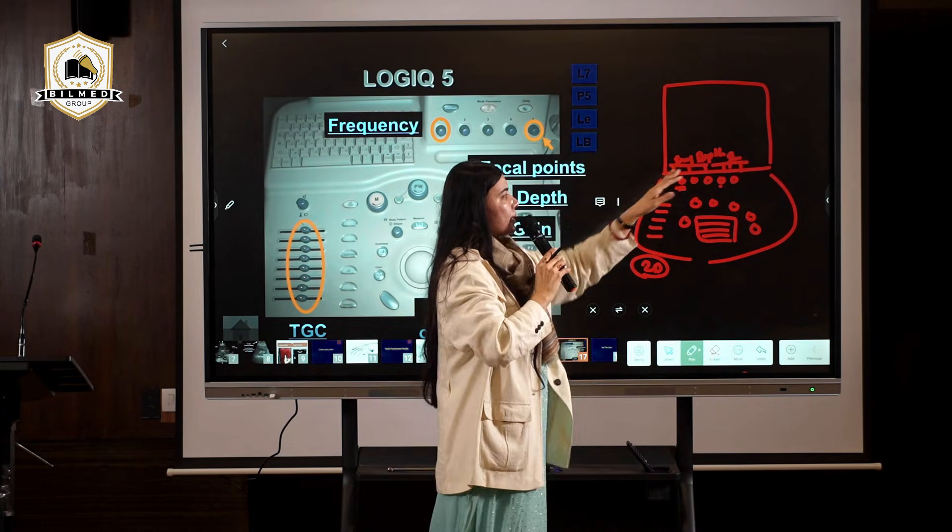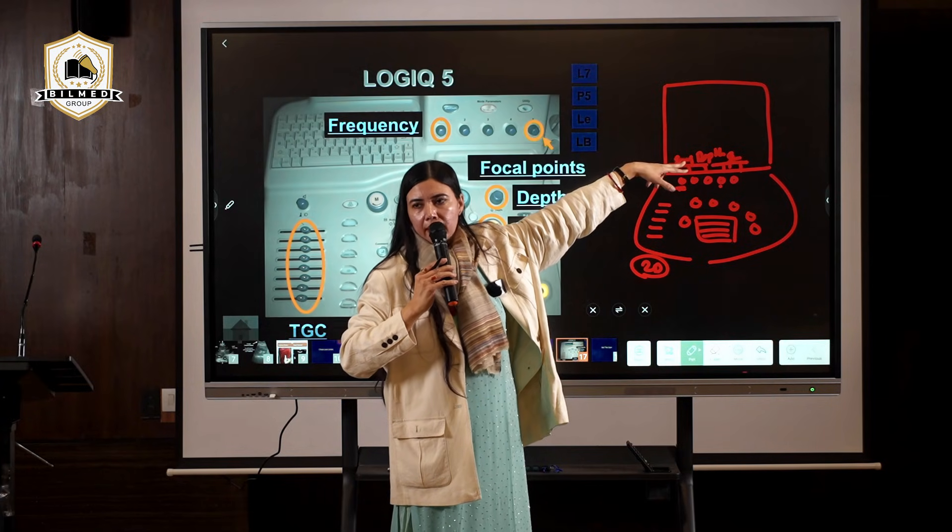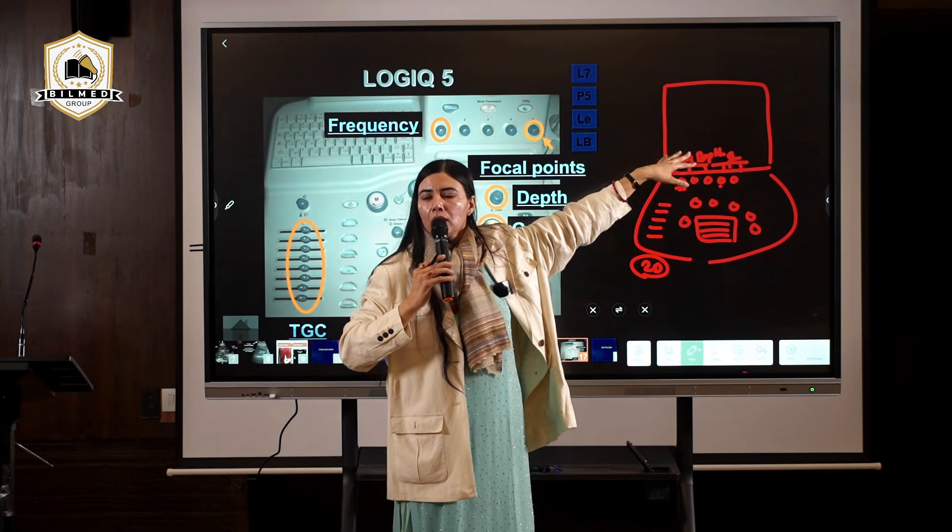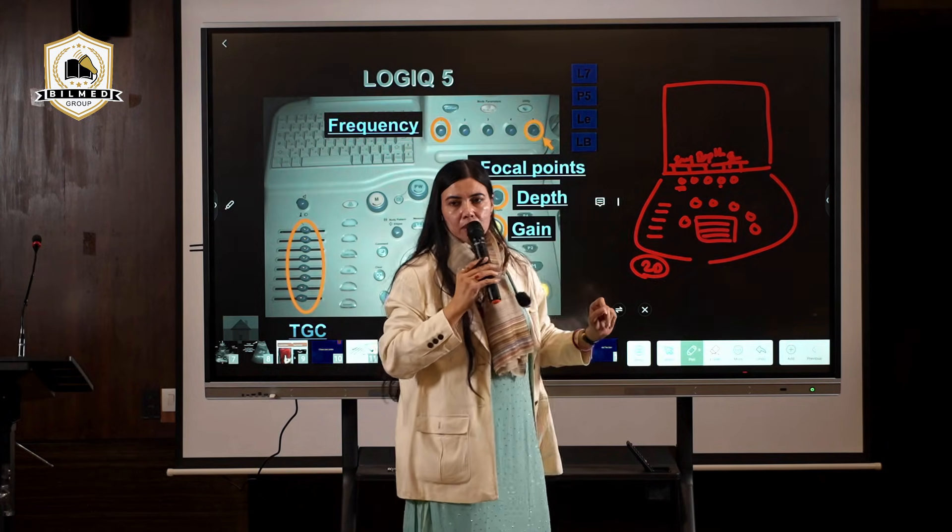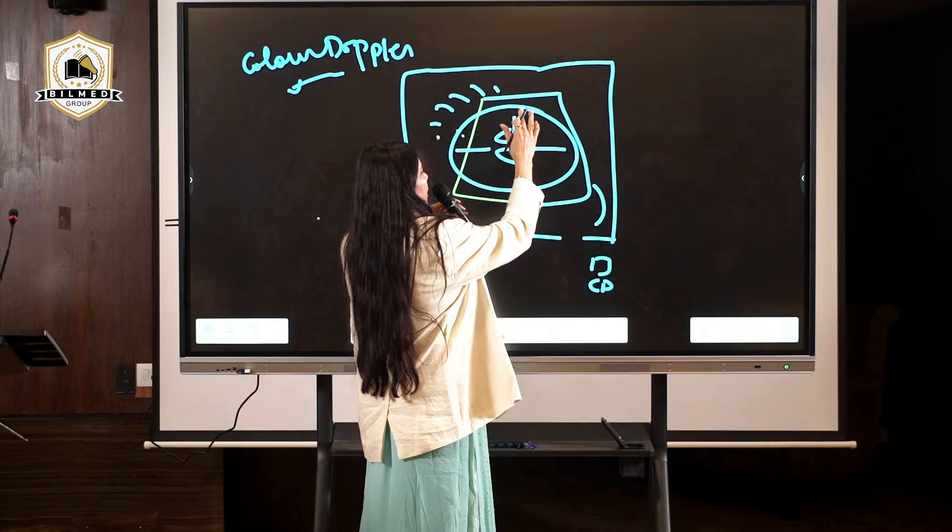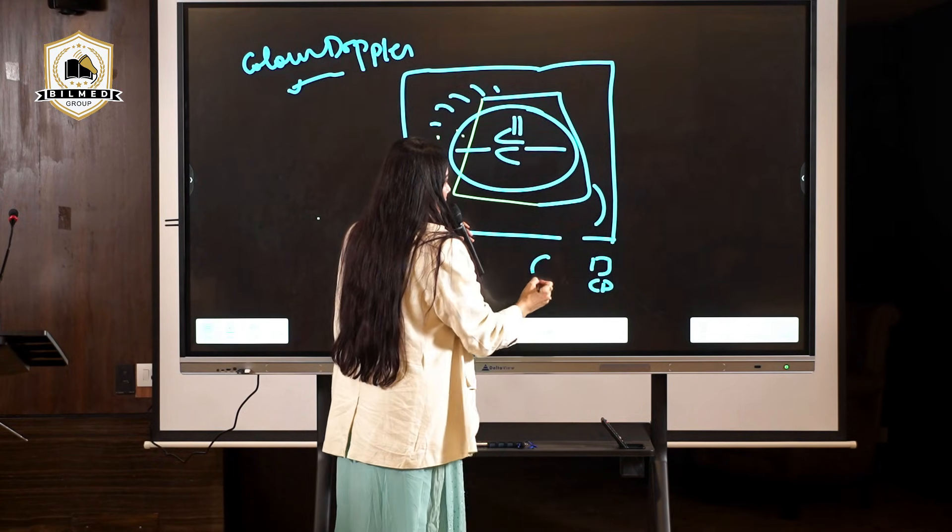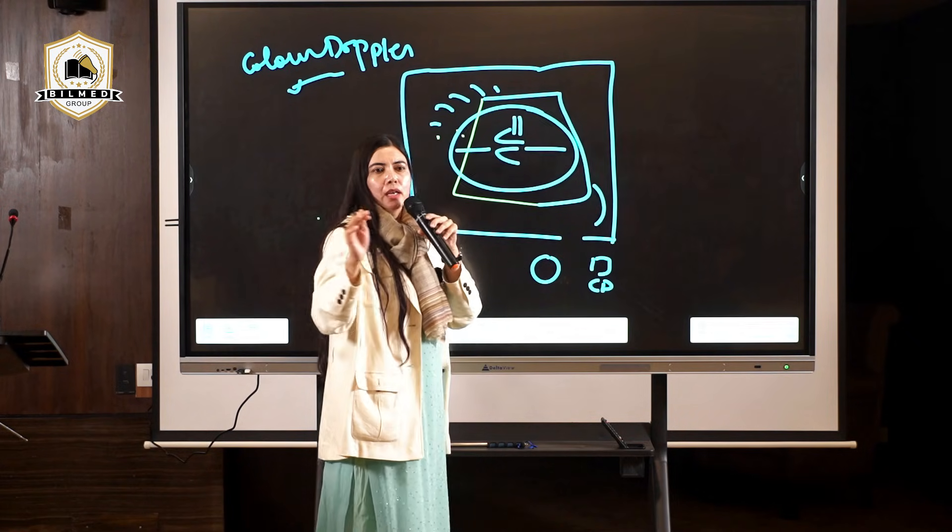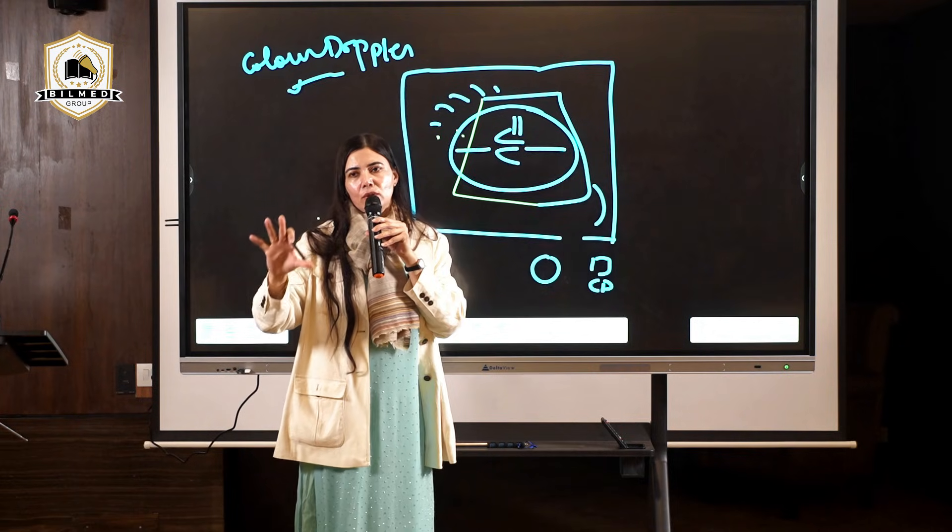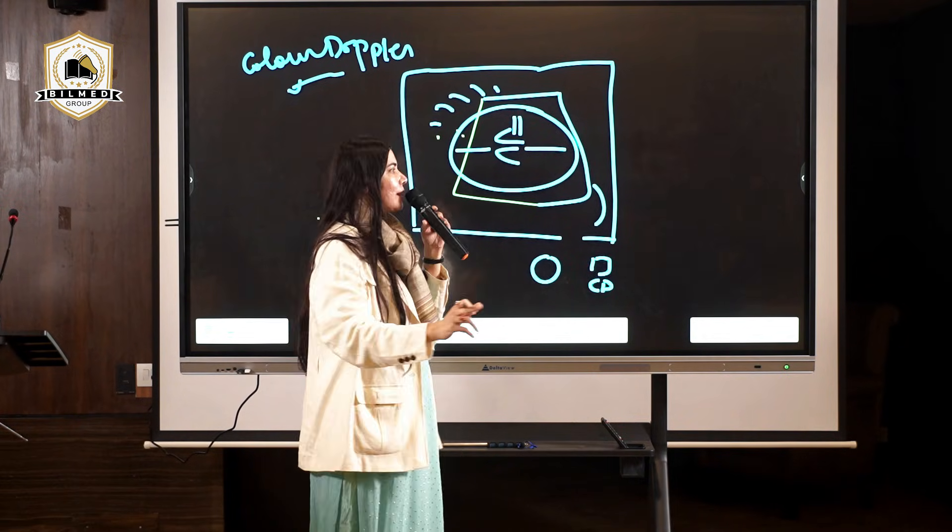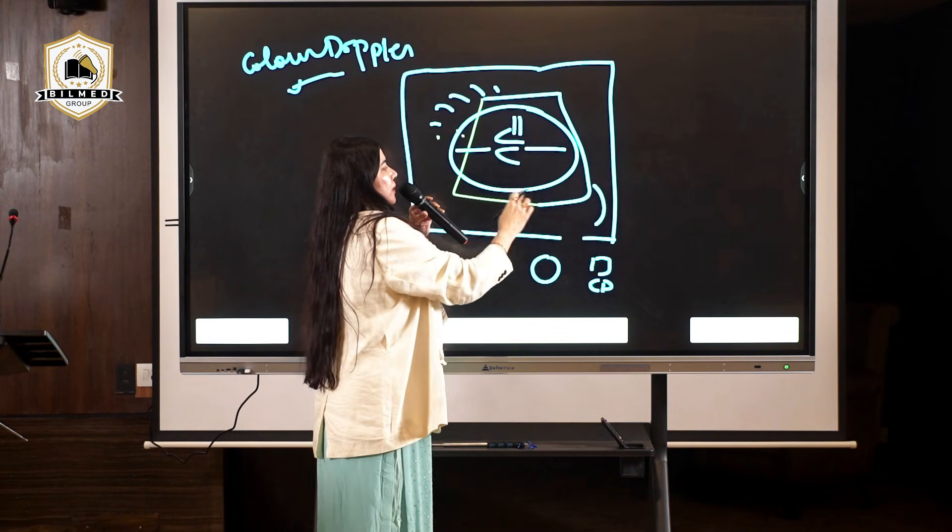This is 2D scan. Now I am switching on to color mode. I have pressed the color button here. Now the color box is there. I can increase or decrease it by rotating the mouse. Your engineer is going to tell you how to increase or decrease the size of this box. First important thing is always keep a check on the size of this box.